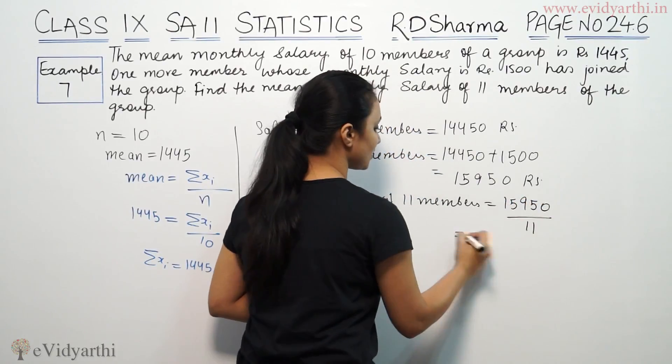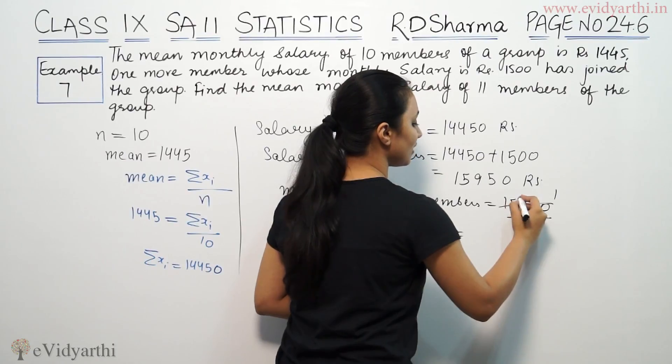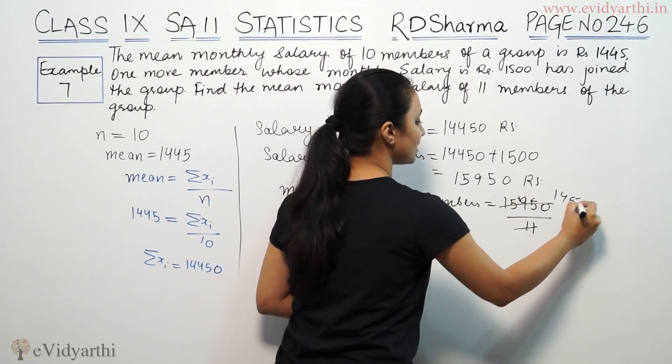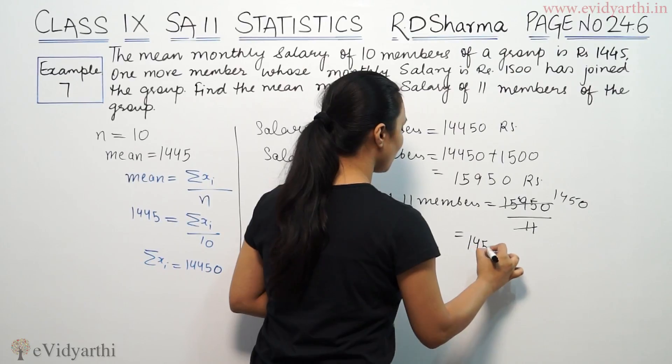This is our salary of 15950 upon 11. This will be 11 ones are 11, 11 fours are 44, 11 fives are 55. This will be 1450.